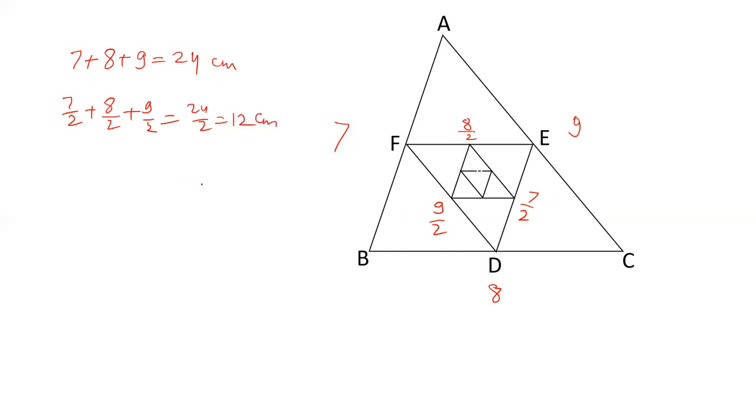DEF's perimeter is 12 cm. The next triangle's perimeter will be 12 by 2 which is 6 cm, and this is the continuation of the sum of all the parameters of all the triangles.